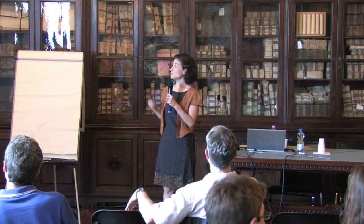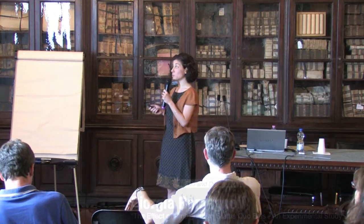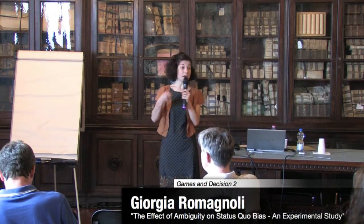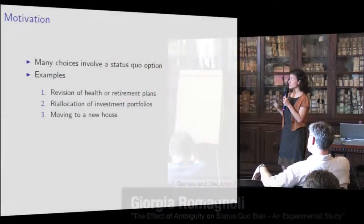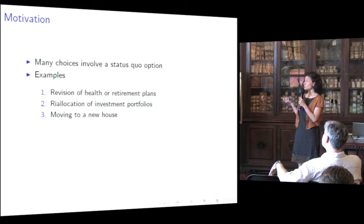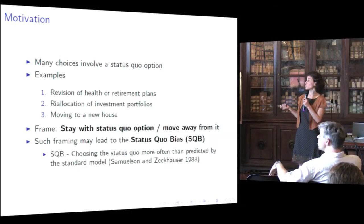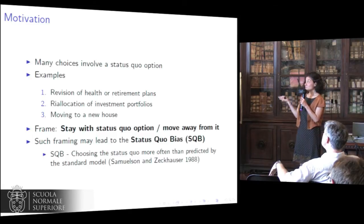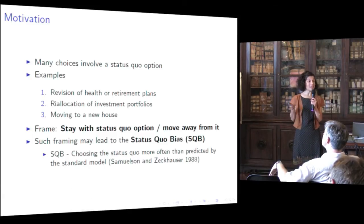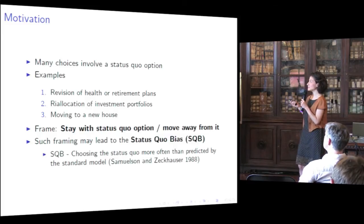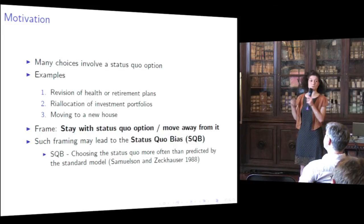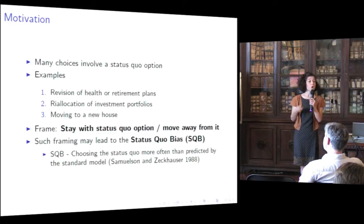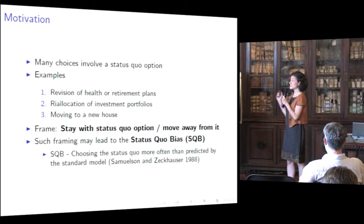Many choices in real life involve a status quo option. Think, for example, of the revision of your health or retirement plans, or the decision of reallocating your savings into a new investment portfolio, or the decision of moving to a new house. These are all choices that share the same frame: one where you either stay with your status quo option or you move away from it. It has been observed both in real life choices and in experiments that such a frame may lead to the status quo bias, which is a behavioural bias defined as the tendency of the decision maker to choose the status quo more often than would be predicted by the standard model.